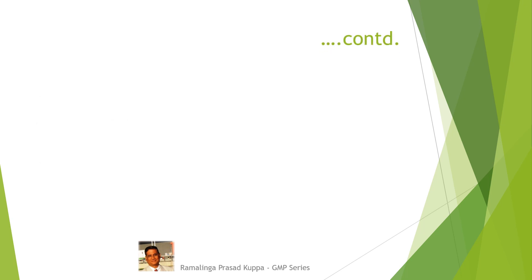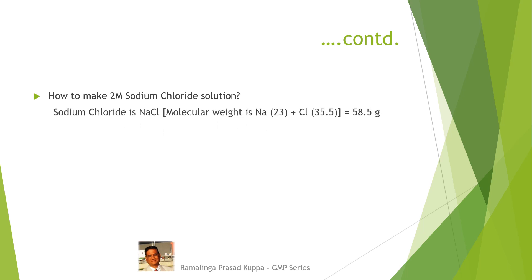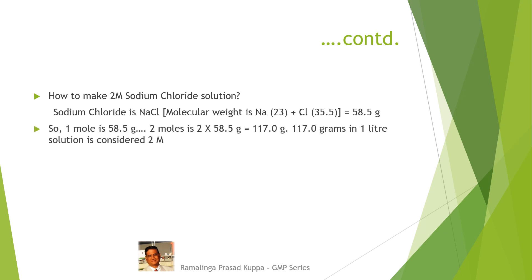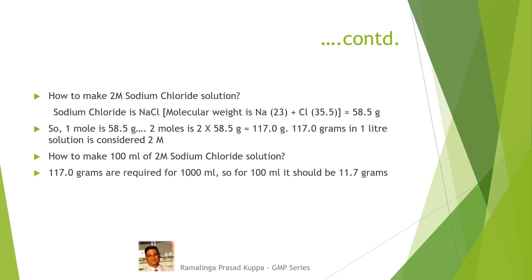Let us see another example: how to make 2 molar sodium chloride solution? Sodium chloride NaCl has molecular weight Na=23 plus Cl=35.5, that equals 58.5 grams. So 1 mol is 58.5 grams, 2 mol is 2 multiplied by 58.5, that becomes 117 grams. So 117 grams in 1 litre solution is 2 molar. For 100 ml of 2 molar sodium chloride: 117 grams are required for 1000 ml, so for 100 ml it should be 11.7 grams.